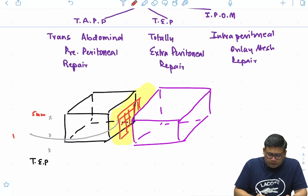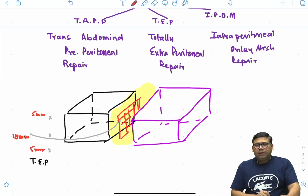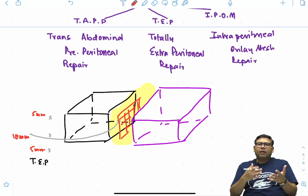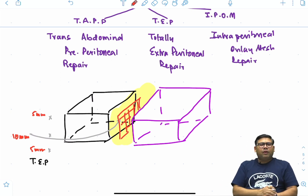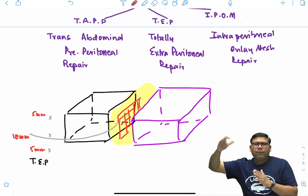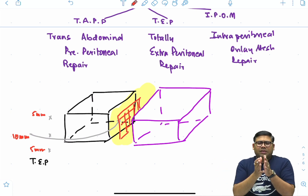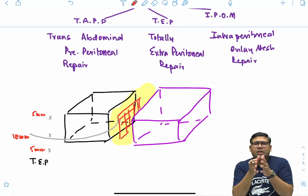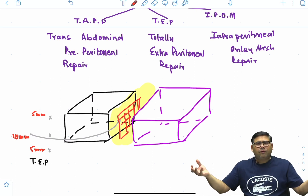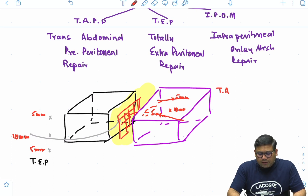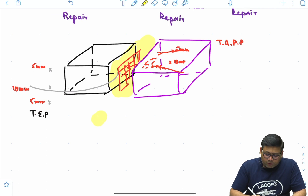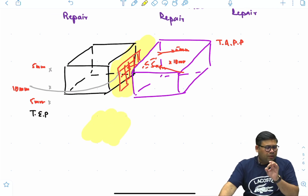For TEP, port placement is 5mm, 10mm camera port, and again a 5mm port. The advantage of TEP is that bilateral hernias can be done in the same setting in less time. However, due to adhesions there may be peritoneal perforations, creating a pneumoperitoneum on the contralateral side that suppresses the working space. Alternatively, you can establish ports and enter via TAPP by cutting open the peritoneum — this is transabdominal preperitoneal repair.